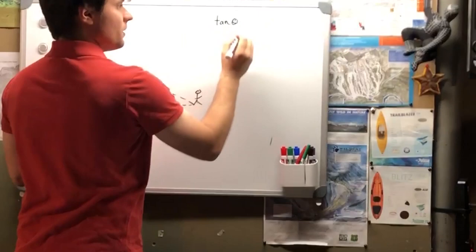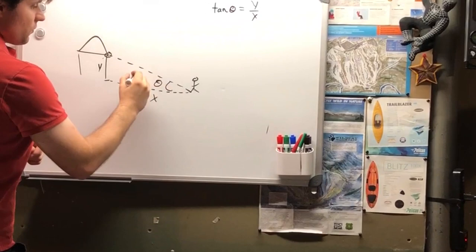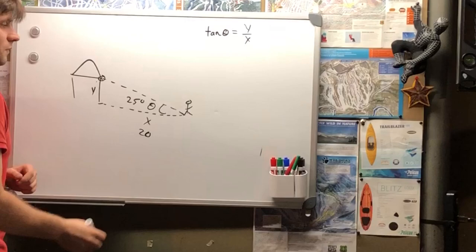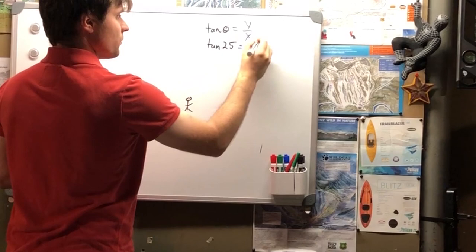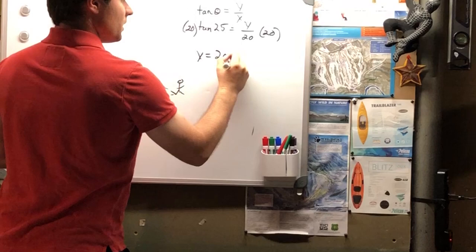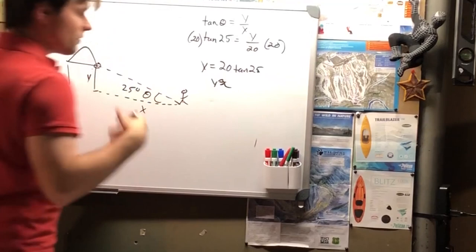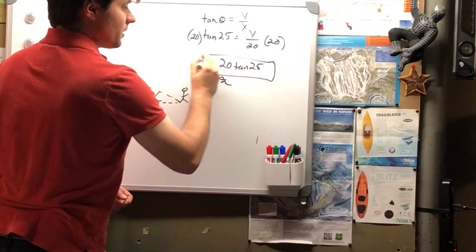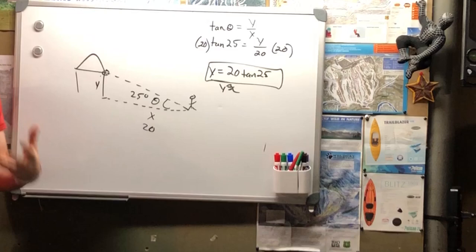So the tangent of theta is equal to y over x. Let's say we measured this to be 25 degrees and we know x is 20 feet. Okay? We're going to plug that into here. So the tangent of 25 is equal to y over 20. Okay? Solve for y by multiplying by 20 on both sides. And we get y is equal to 20 tan 25. Now, that's just an example. So I assume it's some value, close to 20 or so. But you just plug that into your calculator and you should be good to go. That's the basic setup that we're going to use for when we are determining the height of these four objects.